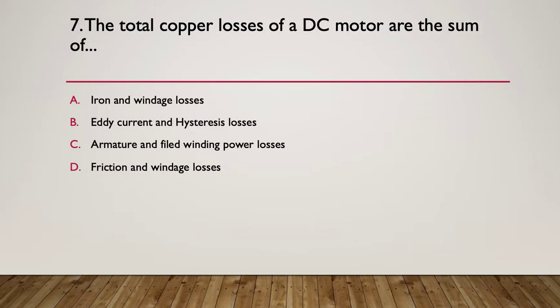Question seven, the total copper losses of a DC motor are the sum of what? A, iron and windage losses, B, eddy current and hysteresis losses, C, armature and field winding power losses, or D, friction and windage losses.